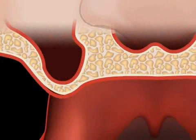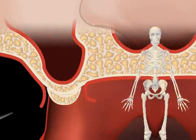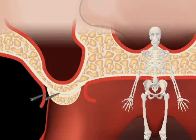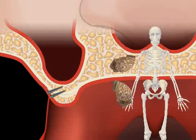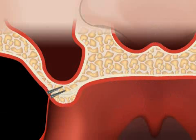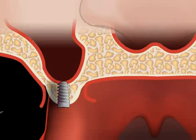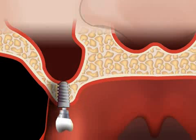In the animation, you see a so-called onlay plastic. The patient's own bone is extracted, for example from the jaw angle, and transplanted to the desired location. This re-establishes the sufficient bone height for an implant, and thus for a fixed dental prosthesis. You can learn more about bone augmentation in the video by the same title.